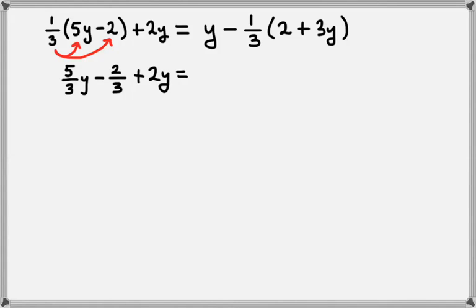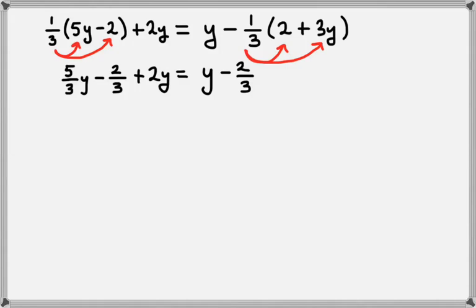On the right side we have y, and then we're going to take the minus 1 third and distribute, so we'll get minus 1 third times 2, which is minus 2 thirds, and minus 1 third times 3y, which is negative y.